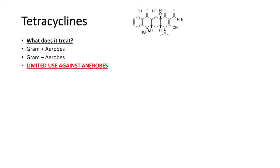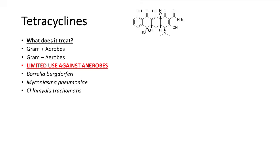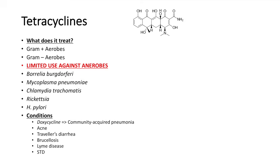Some of the bacterial species that tetracyclines are effective against include Borrelia burgdorferi, the bacteria that causes Lyme disease; Mycoplasma pneumoniae, a cause of pneumonia; Chlamydia trachomatis for chlamydial STDs; the Rickettsia genus of bacteria; and Helicobacter pylori. Some of the conditions that tetracyclines are used to treat include community-acquired pneumonia — typically using doxycycline — acne, traveler's diarrhea, brucellosis, Lyme disease, and STDs.